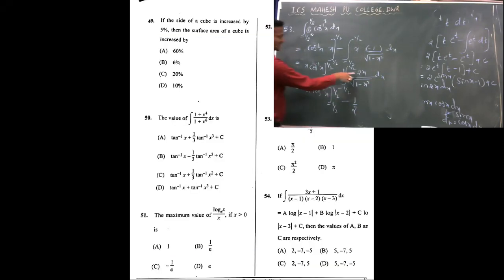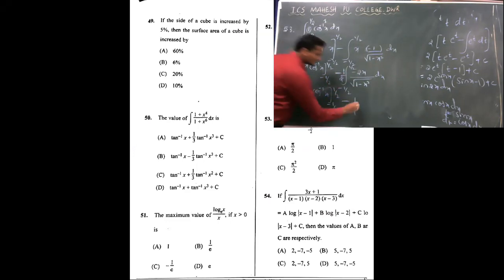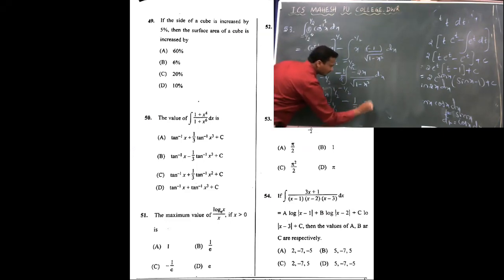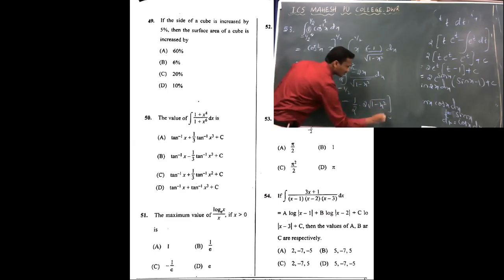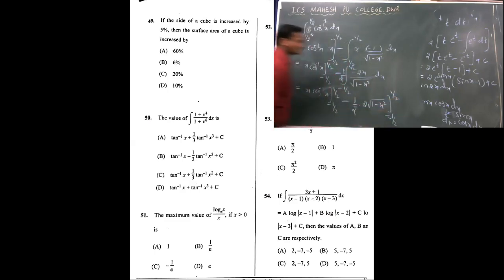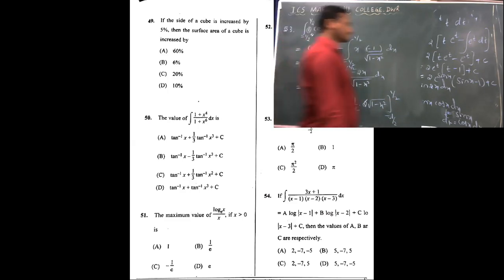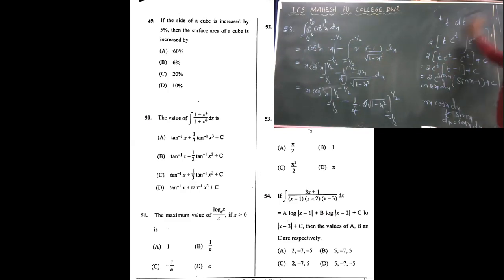It is of the form f'(x) upon root f(x), which equals 2 times root f(x). So integration becomes 2 root(1 minus x²), with limits minus 1/2 to 1/2. Here the factor of 2 cancels. Now apply the limits to get the final answer.